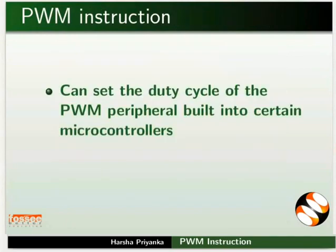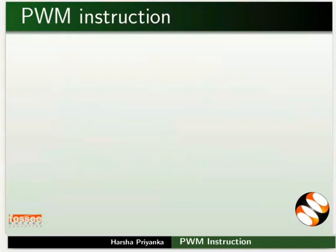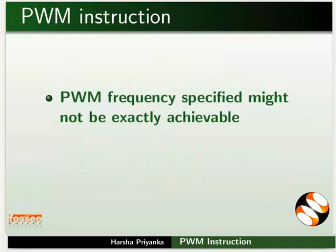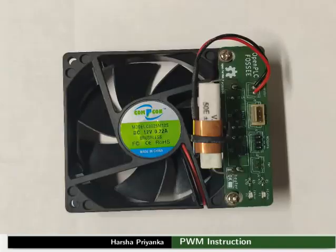This sets the duty cycle of the PWM peripheral built into certain microcontrollers. The duty cycle must be a number between 0 and 100. We can specify the PWM frequency in Hertz. The frequency specified might not be exactly achievable — it depends on how it divides into the microcontroller's clock frequency. Here, we will create a logic to control the speed of a fan using PWM, using the fan in the heater module.